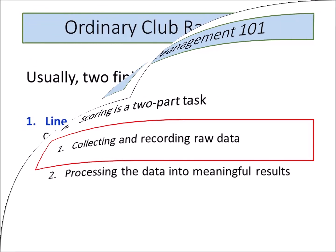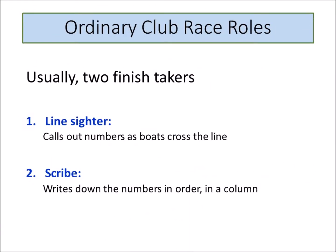For ordinary club races, we usually have two people in the finish boat. The jobs are line sider — this person calls out the numbers as boats cross the finish — and scribe, who writes down the sail numbers in a column as they are called. Sometimes one person must perform both jobs.